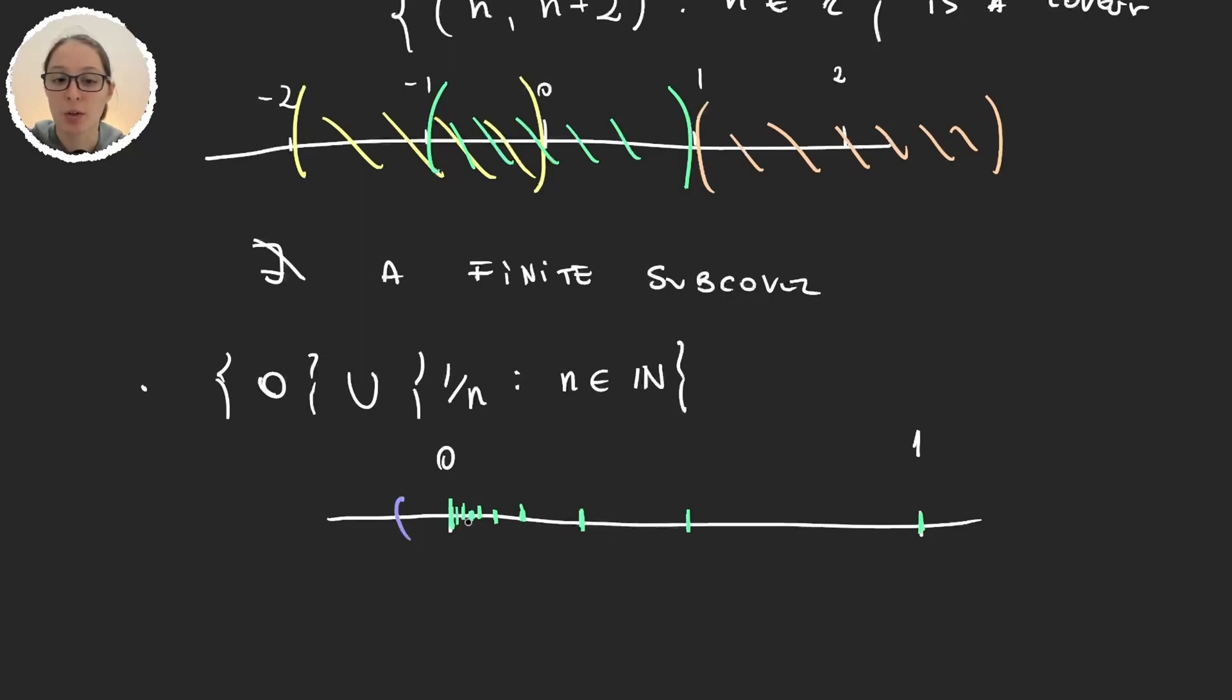What happens here is that whenever I grab an open interval that has zero, I am immediately grabbing here infinitely many numbers of these other sets.